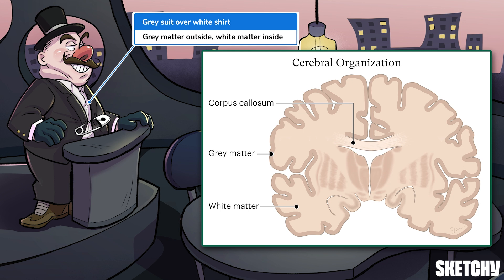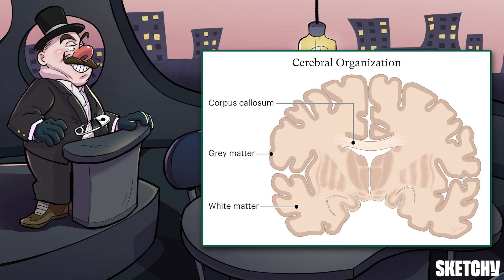Pro tip: this is the opposite organization of a spinal cord. And that colossal pin holding the two sides of his suit together? It represents the corpus callosum. The corpus callosum is the largest of several commissures, or bundles of axons, that connect the two cerebral hemispheres across the midline.